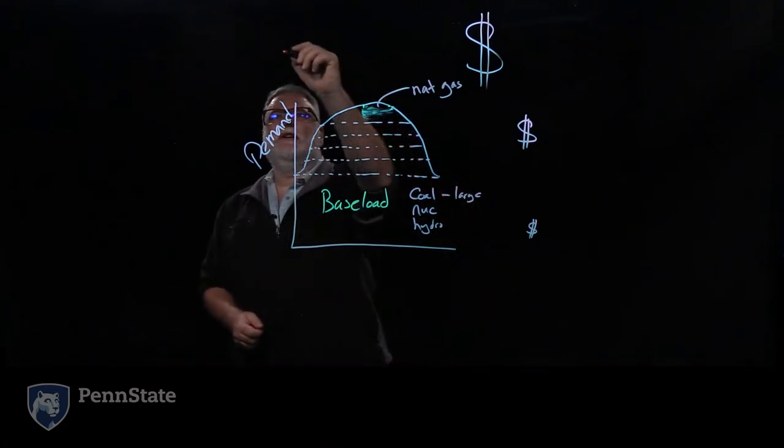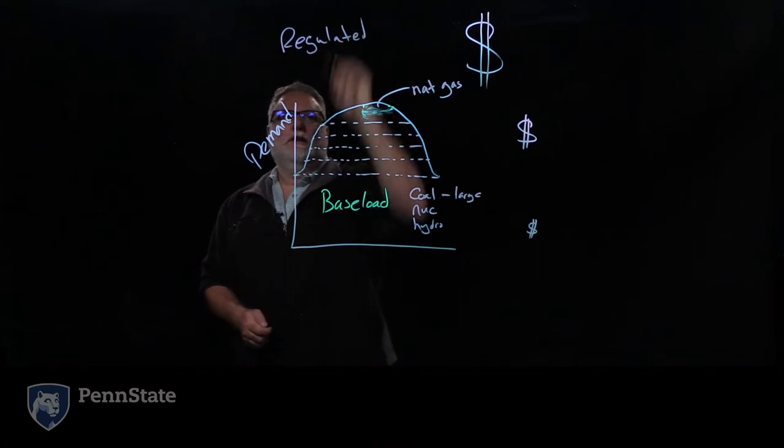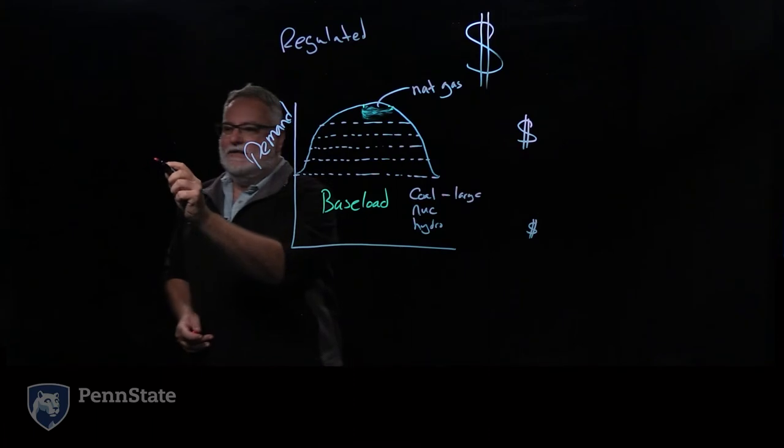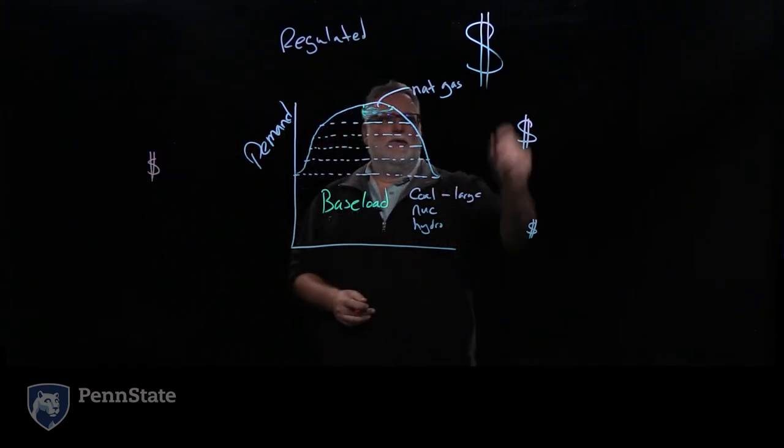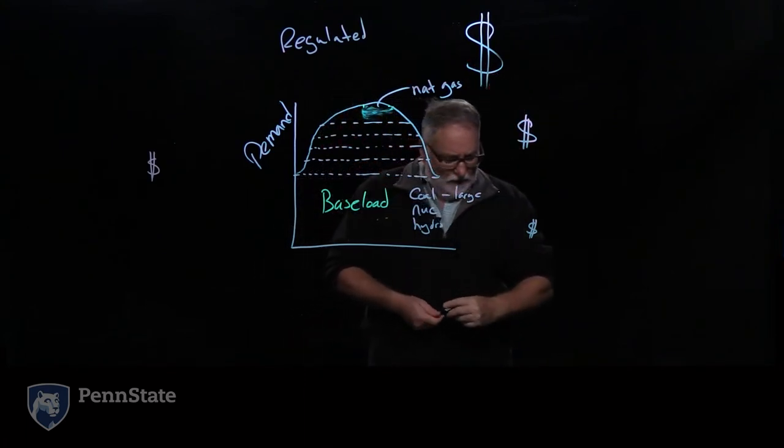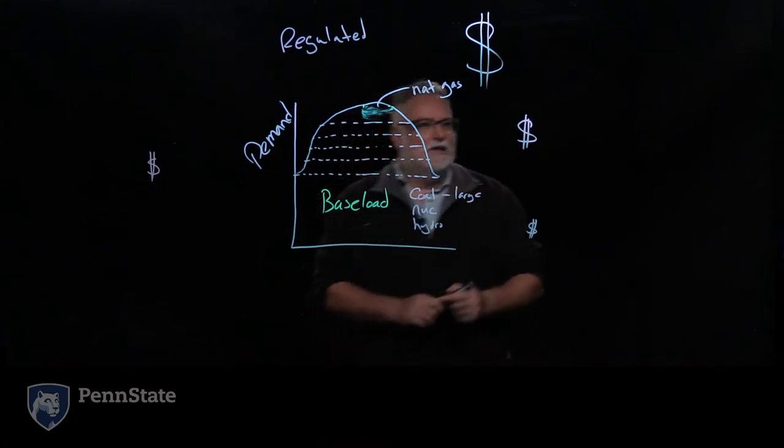And so this was how we did things under the regulated system. And so even though when you pay for your electricity, you had a standard cost per kilowatt hour, you can see that we have a variable cost going through the day. So it was decided that we might be able to do better by going to a deregulated system.